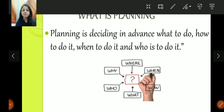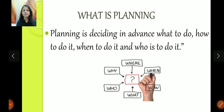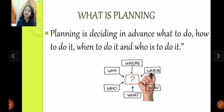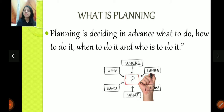First of all, what is planning? Planning is very simple — deciding in advance. Decide what to do, how to do it, when to do it, and who is to do it. We are talking in terms of the organization, so here we are talking about the five W's: what to do, how to do it, when to do it, and who is to do it. So that is planning.